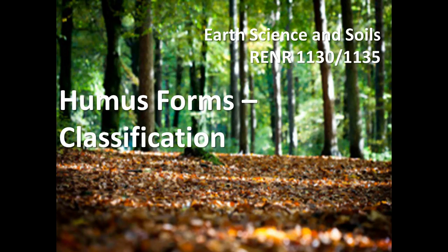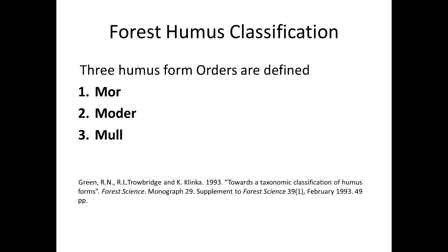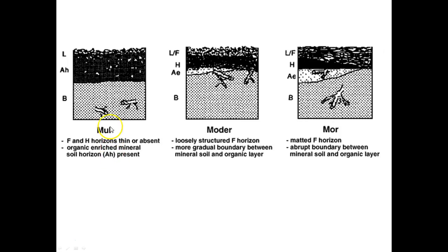Today I'm going to talk about humus form classification, elaborating on what we learned a couple weeks ago. Recall that there are three different humus form orders: the mor, the moder, and the mull.